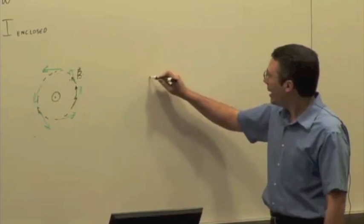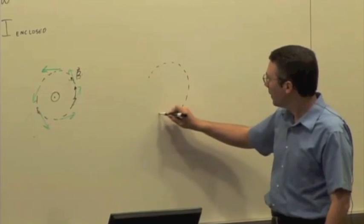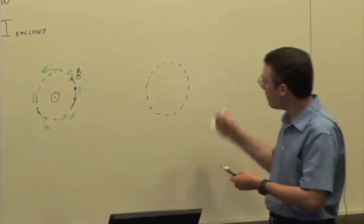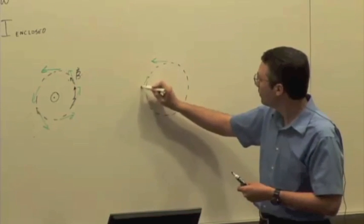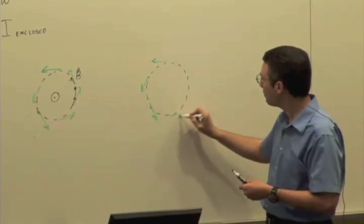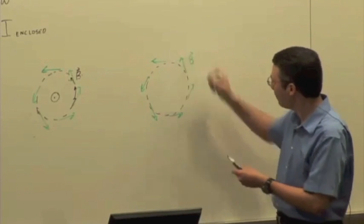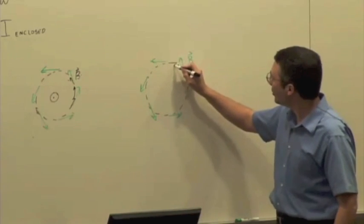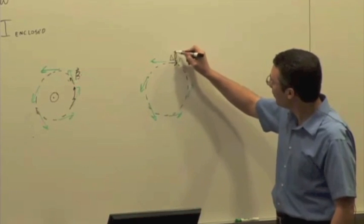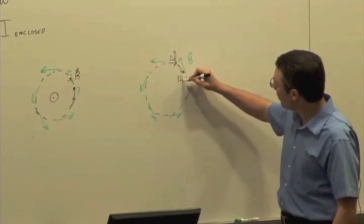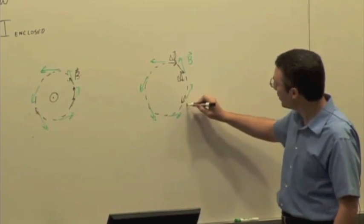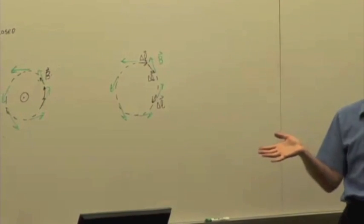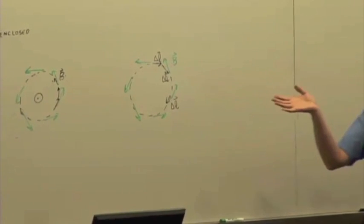Had I chosen the same, if I had the same magnetic field, so that's B again, but I choose a path integral in the opposite direction, so delta L is that way, then when I sum up all those dot products of B and delta L, now I'm going to get a negative number, right?